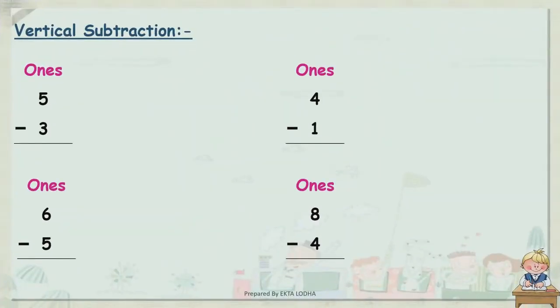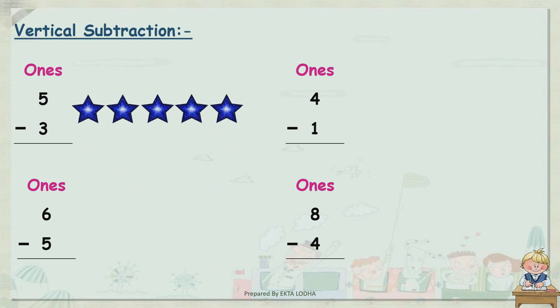Vertical subtraction. 5 minus 3. Here we have to subtract 3 from 5. Let's count the stars: 1, 2, 3, 4, 5. We have to subtract 3 stars from these 5, so let's cross out 1, 2, and 3. Now how many are remaining? Let's count: 1 and 2. So kids, our answer is 2.